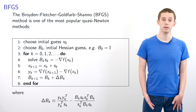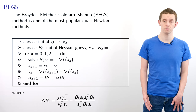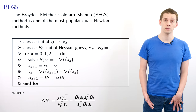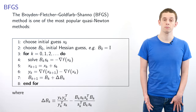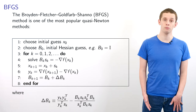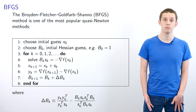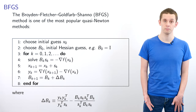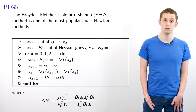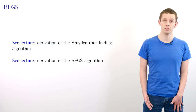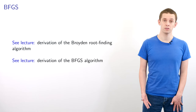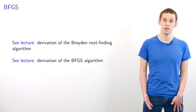We then calculate y_k as grad f of x_{k+1} minus grad f of x_k, and we then update our approximate Hessian: B_{k+1} equals B_k plus ΔB_k. The formula for ΔB_k involves y_k, s_k, and B_k. At first glance this seems like a rather complicated formula, but we'll now take a look at where this comes from by first stepping back and looking at a simpler case — the Broyden root-finding method — which contains the key idea. Once we've looked at this, we'll look at exactly where the BFGS update comes from.